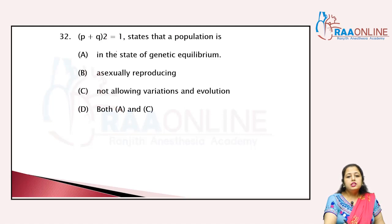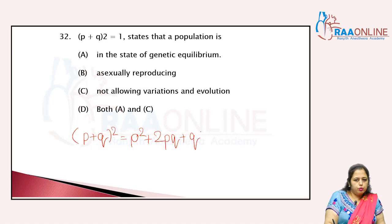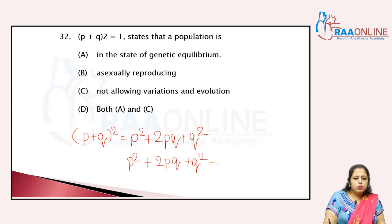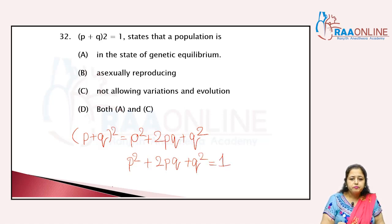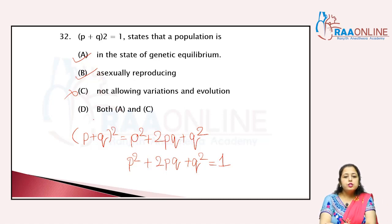This shows the Hardy-Weinberg principle. (p + q)² = p² + 2pq + q². According to Hardy-Weinberg principle, p² + 2pq + q² = 1. In the state of genetic equilibrium, sexually reproducing populations show this. It allows variation and evolution. So the answer is both A and C, that is answer D.